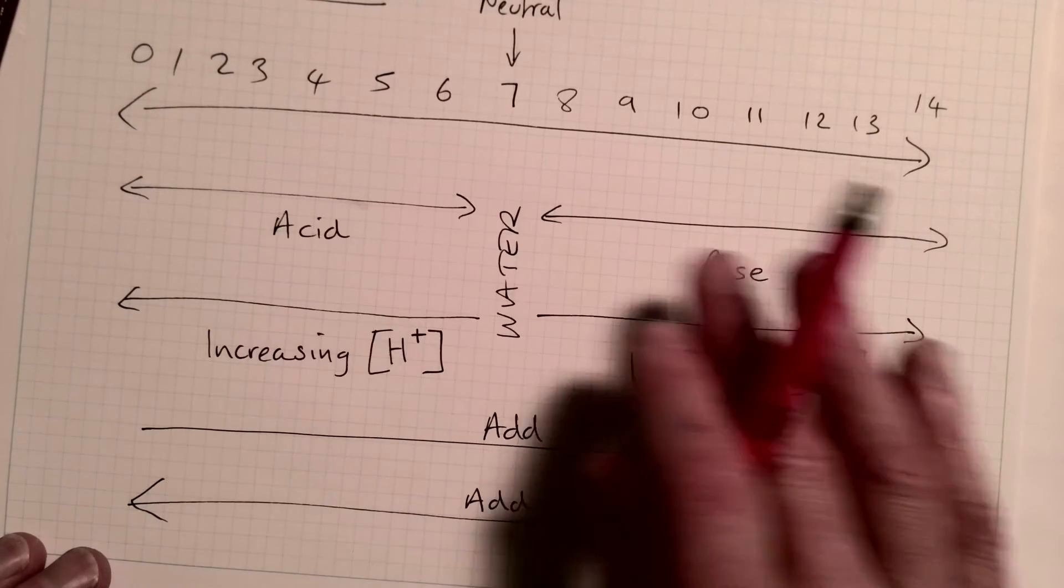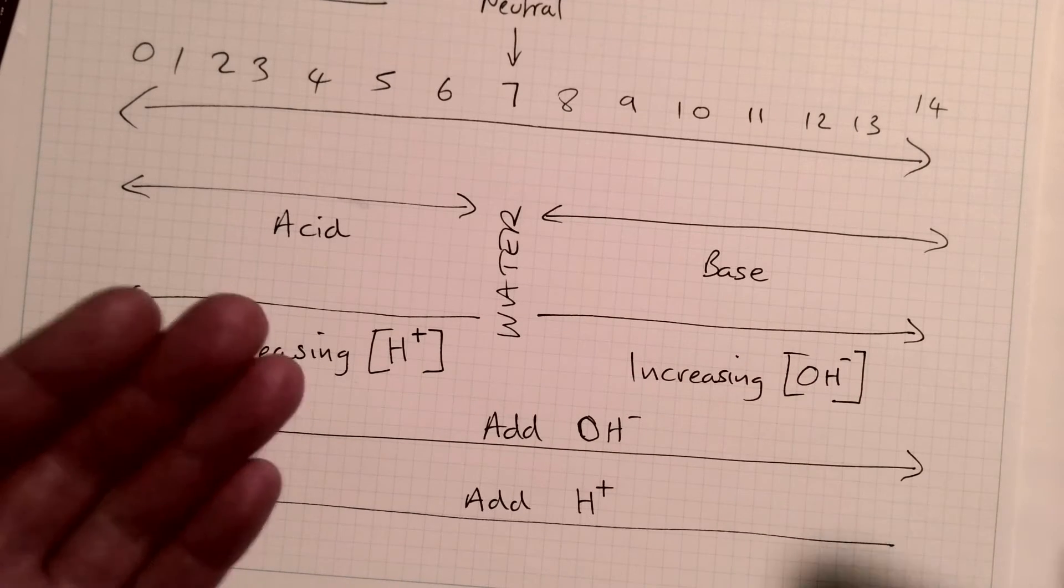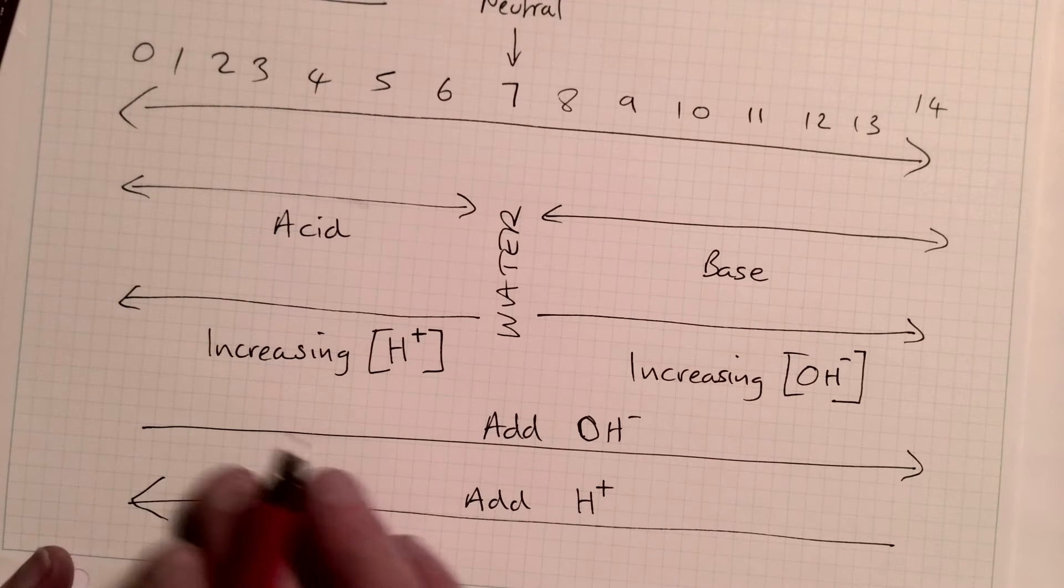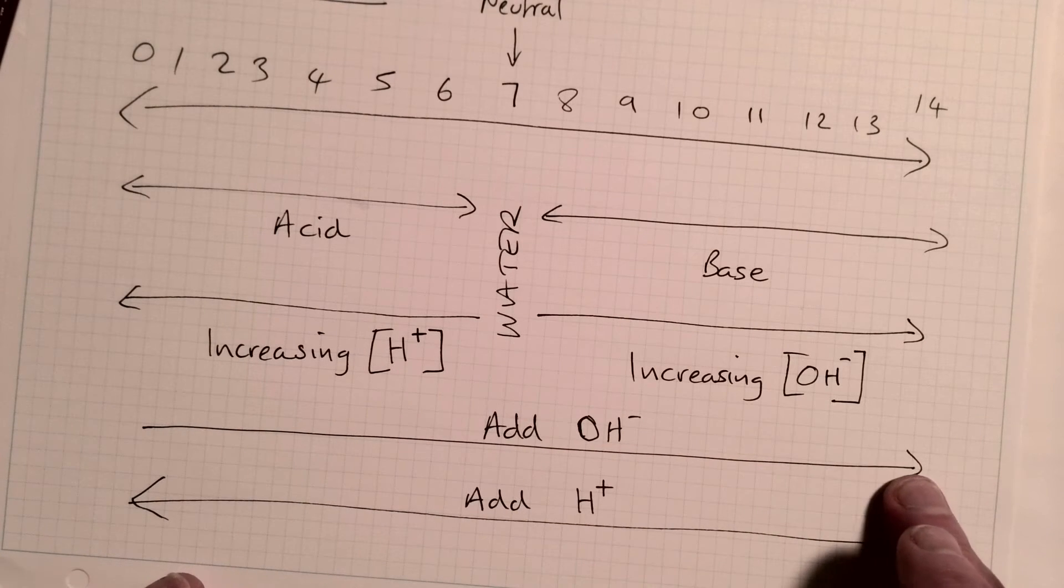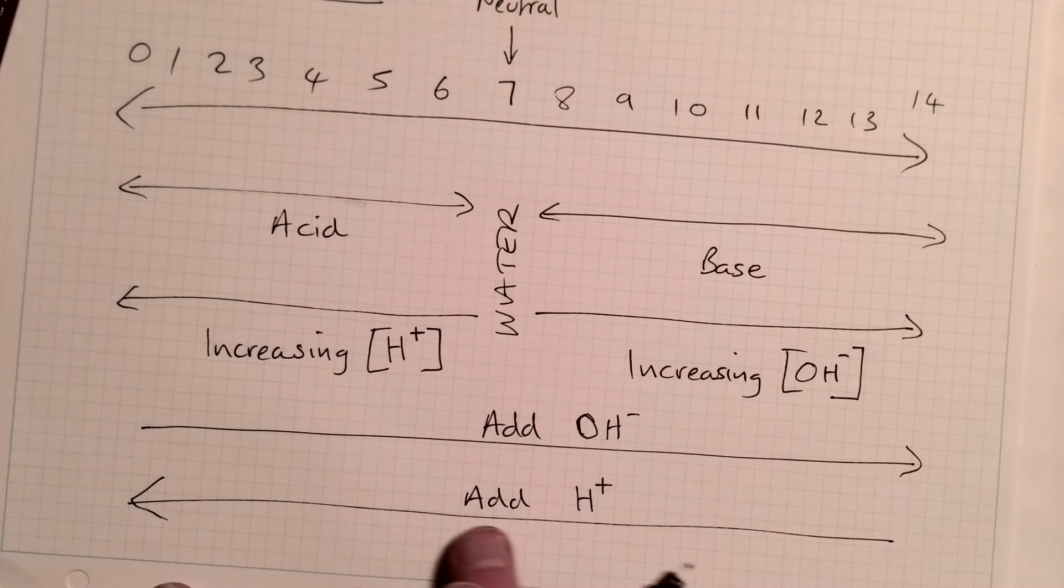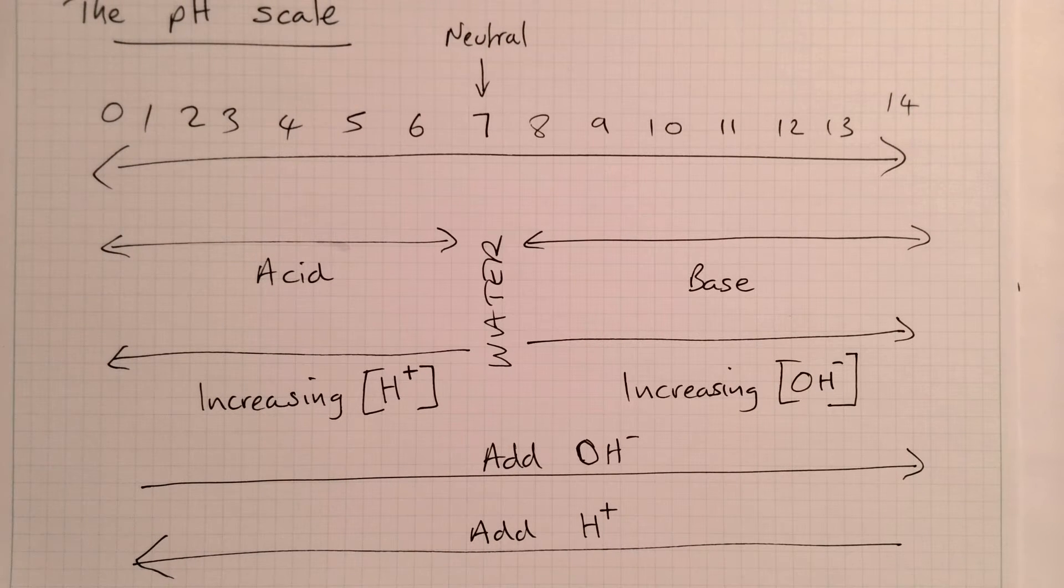So acids, bases, hydrogen ions, hydroxide ions, they're all related to water because when we bring those two things together, we start making water molecules. If I add hydroxide, I'm going to make my solution move towards 14. If I add hydrogen ions, I'm going to make my solution move towards zero and become more acidic. So there you go, that is a brief introduction to the pH scale.